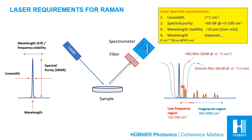Recording Raman signals in the low frequency region is possible by using a VBG-based notch filter, which is much narrower and can provide blocking of the laser light of more than 60 dB at as close as 5 inverse centimeters. This means the laser source must also have more than 60 dB spectral purity at less than 5 inverse centimeters from the main peak, which at 785 nanometers corresponds to about 300 picometers.